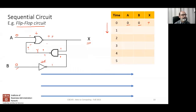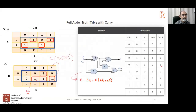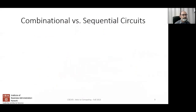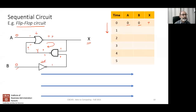Every circuit we've seen so far has never fed the output back into the input. These previous circuits are referred to as combinational circuits, simply because they don't have any memory — they depend only on the input. But sequential circuits have what is referred to as memory, because it depends on past values.